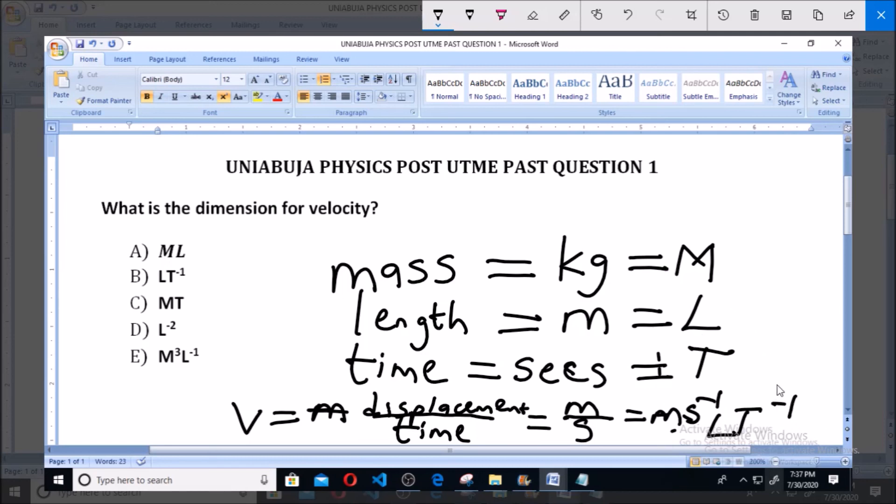So, the dimension for velocity as we have obtained here, I'm going to write this whole, will be up here. It's L, T, raised to the power of minus 1. And from our options, that is option B. So, as we have determined, the dimension for velocity is L, T, raised to the power of minus 1.